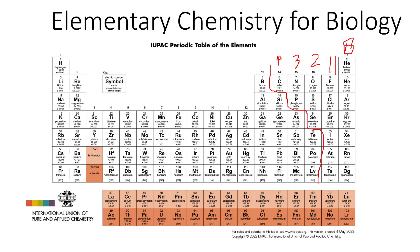This column will usually have a positive 1. The column over here will have a positive 2. The ones in the middle vary — for instance, iron can have a positive 1 or a positive 2, and zinc can have different amounts of positive charge.